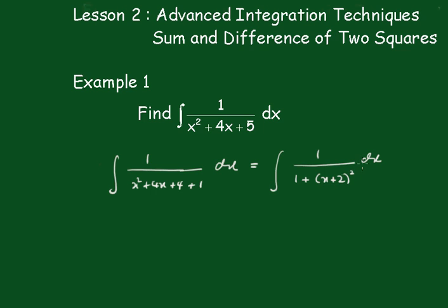Now you could use a substitution, but it's not really necessary. That's just the inverse tan function. So that's going to be tan to the minus 1 of x plus 2 plus the constant.